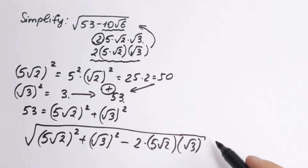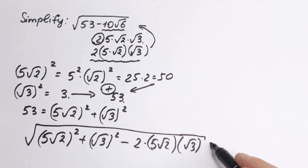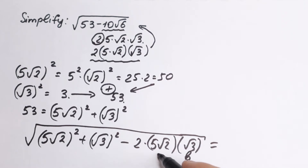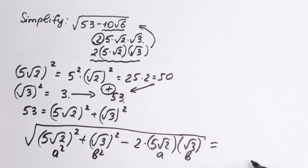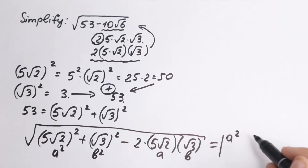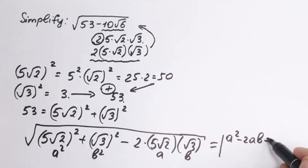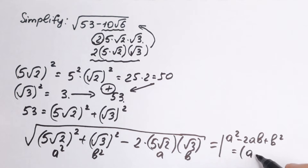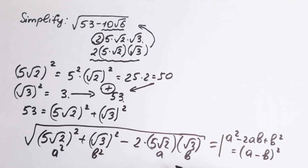And I hope you can see it now — if you recognize the identity here, this is brilliant. We have a² + b² − 2ab, where a = 5√2 and b = √3. This is exactly the algebraic identity a² − 2ab + b², which equals (a − b)². So the entire expression inside our square root sign can be written as (a − b)².